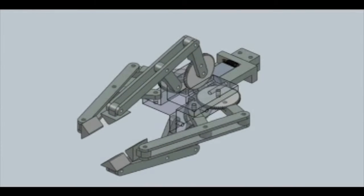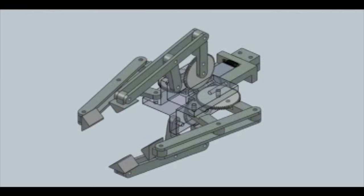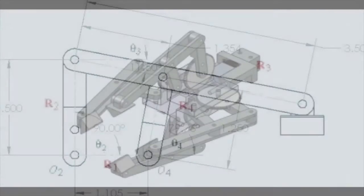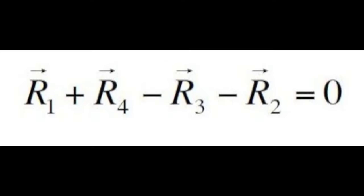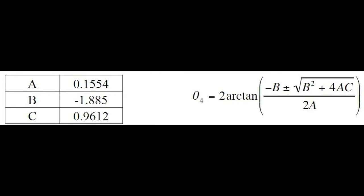For our kinematic analysis, we're using a motion picture to help us describe what's going on. Here's our figure that's going to be describing the links and the angles. Here's our vector loop equation. Here's our theta 4 equation that's solving for theta 4.